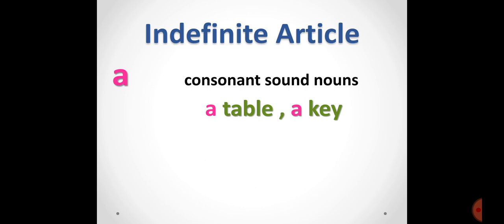The indefinite article 'a' — as you know, 'a' means one. We always use 'a' with consonant sound nouns, meaning nouns whose first letter is a consonant or which begin with a consonant sound. For example, 'table' — the first letter of table is 't', and 't' is a consonant, so if there is one table, we always say 'a table.' Similarly, 'key' — the first letter of key is 'k', so we always use 'a key' because 'k' is a consonant.